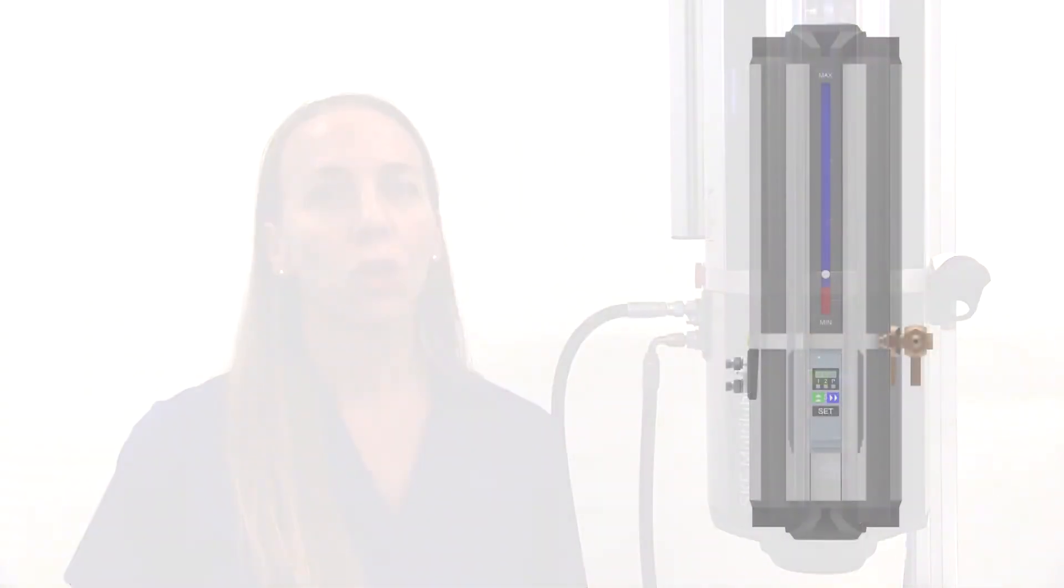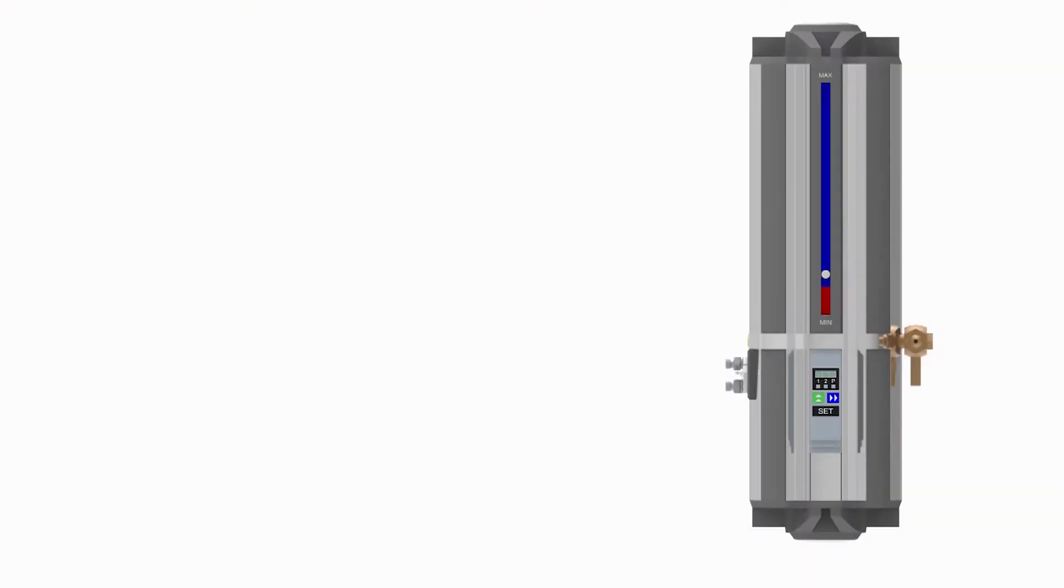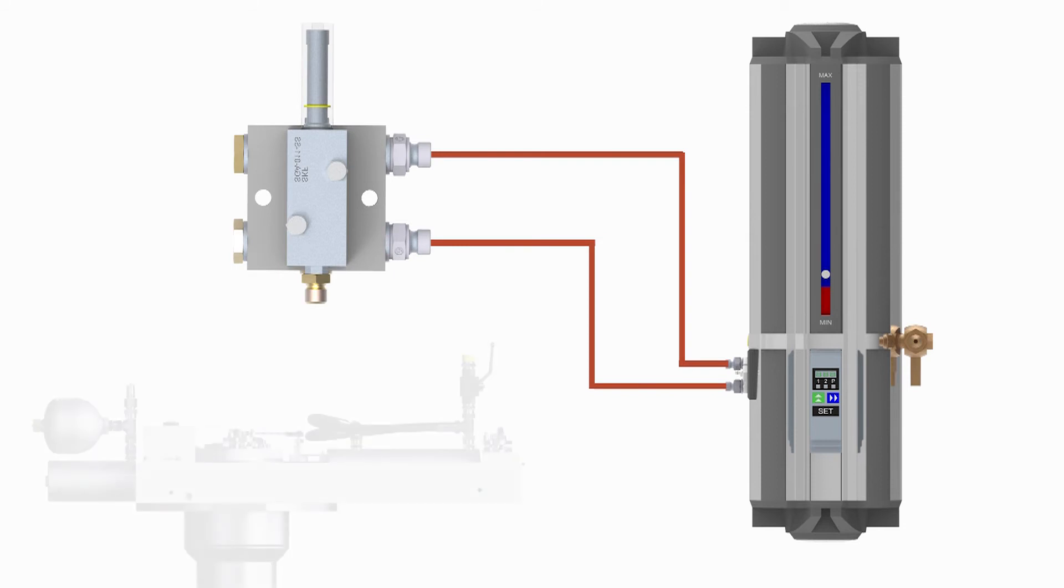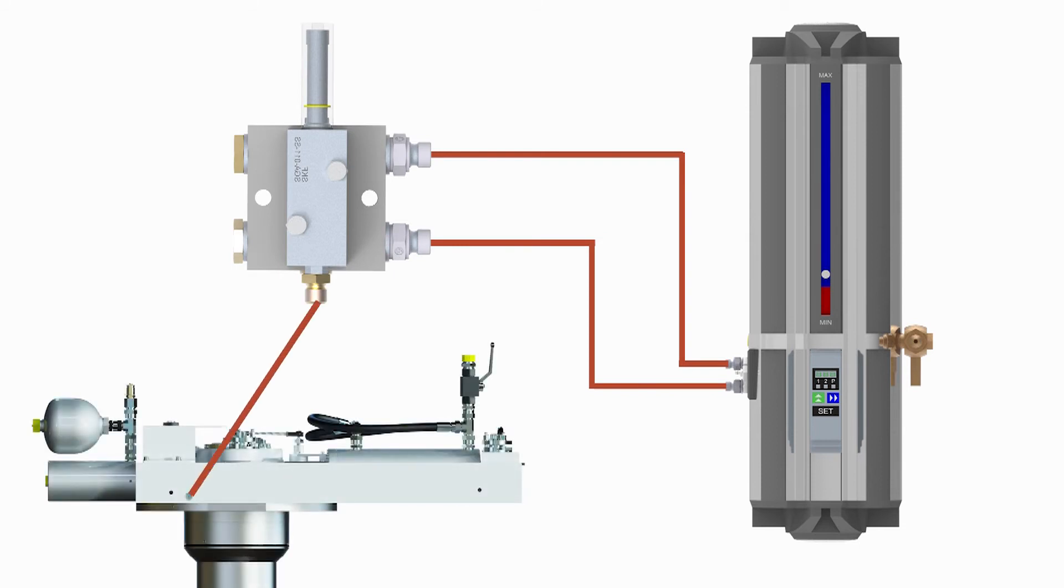If this is a new autogreaser installation or the unit has been idle for a while, you'll need to make sure the piping is full of grease also. Don't try to use the autogreaser to fill up the piping. It'll take forever. Instead, do it manually or better yet with an electric or pneumatic grease pump. You'll have to fill the lines in two phases. The lines between the autogreaser control unit and the doser, and then the lines from the doser to the hull unit.